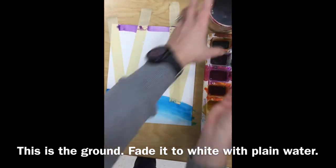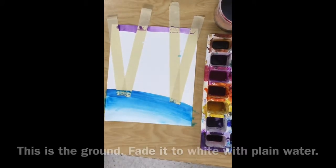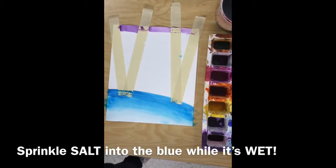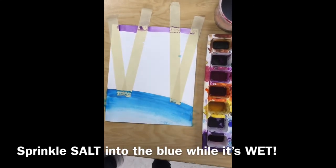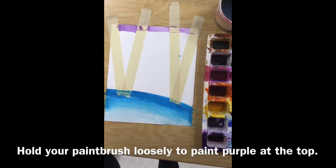You're going to fade it to white using plain water towards the bottom of your arc. Then sprinkle salt into the blue watercolor while it is wet. If you do it after it has already dried a little bit, it will not work.